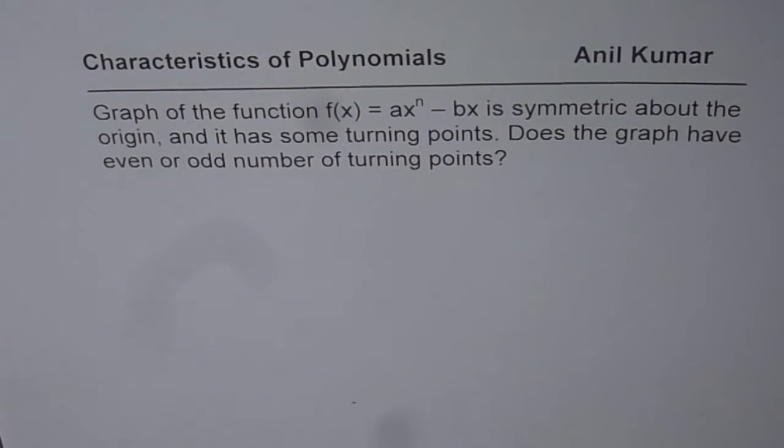I'm Anil Kumar sharing with you an excellent question on turning points. The question here is: graph of the function f(x) equals ax to the power of n minus bx is symmetric about the origin and it has some turning points. Does the graph have even or odd number of turning points? You can pause the video, answer the question and then look into my suggestions.